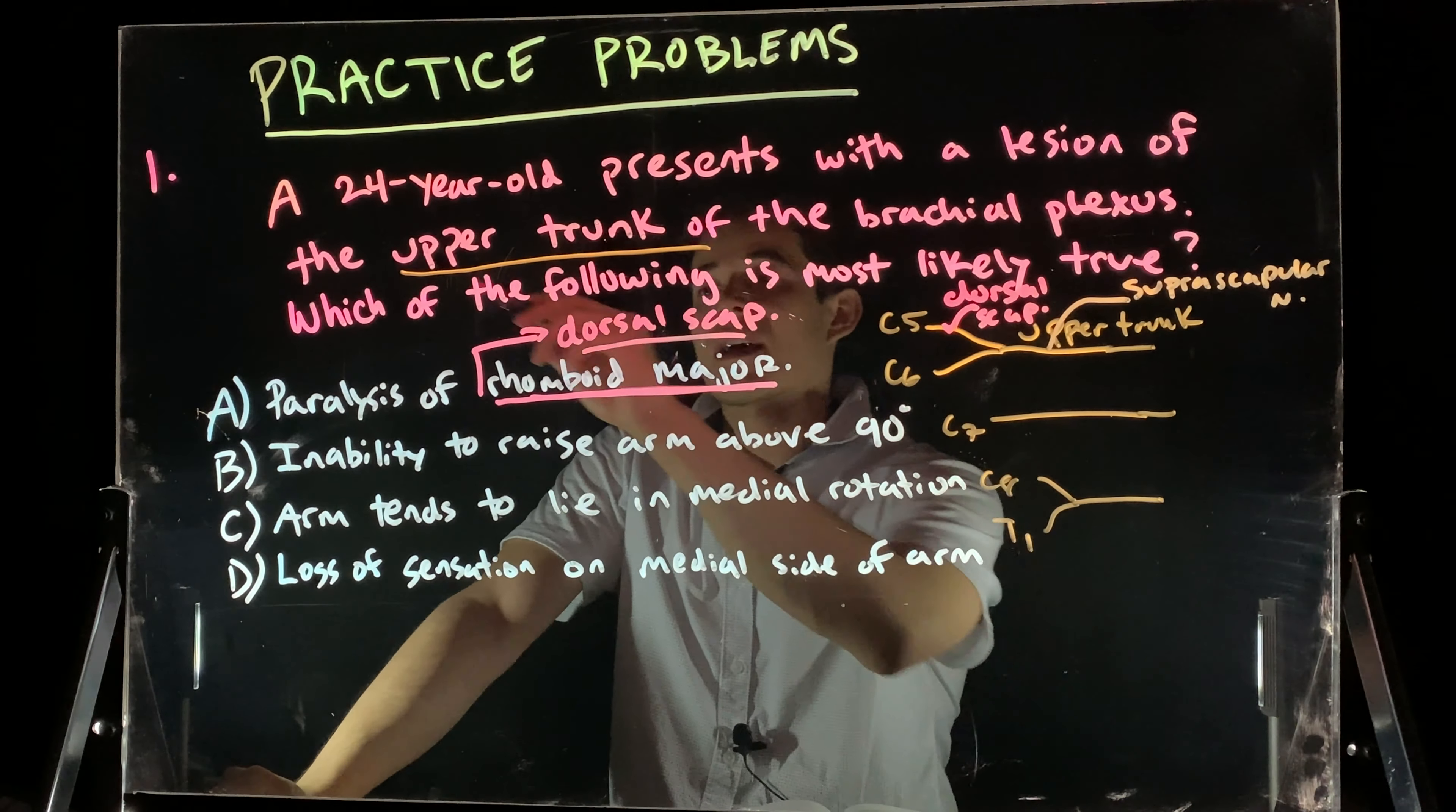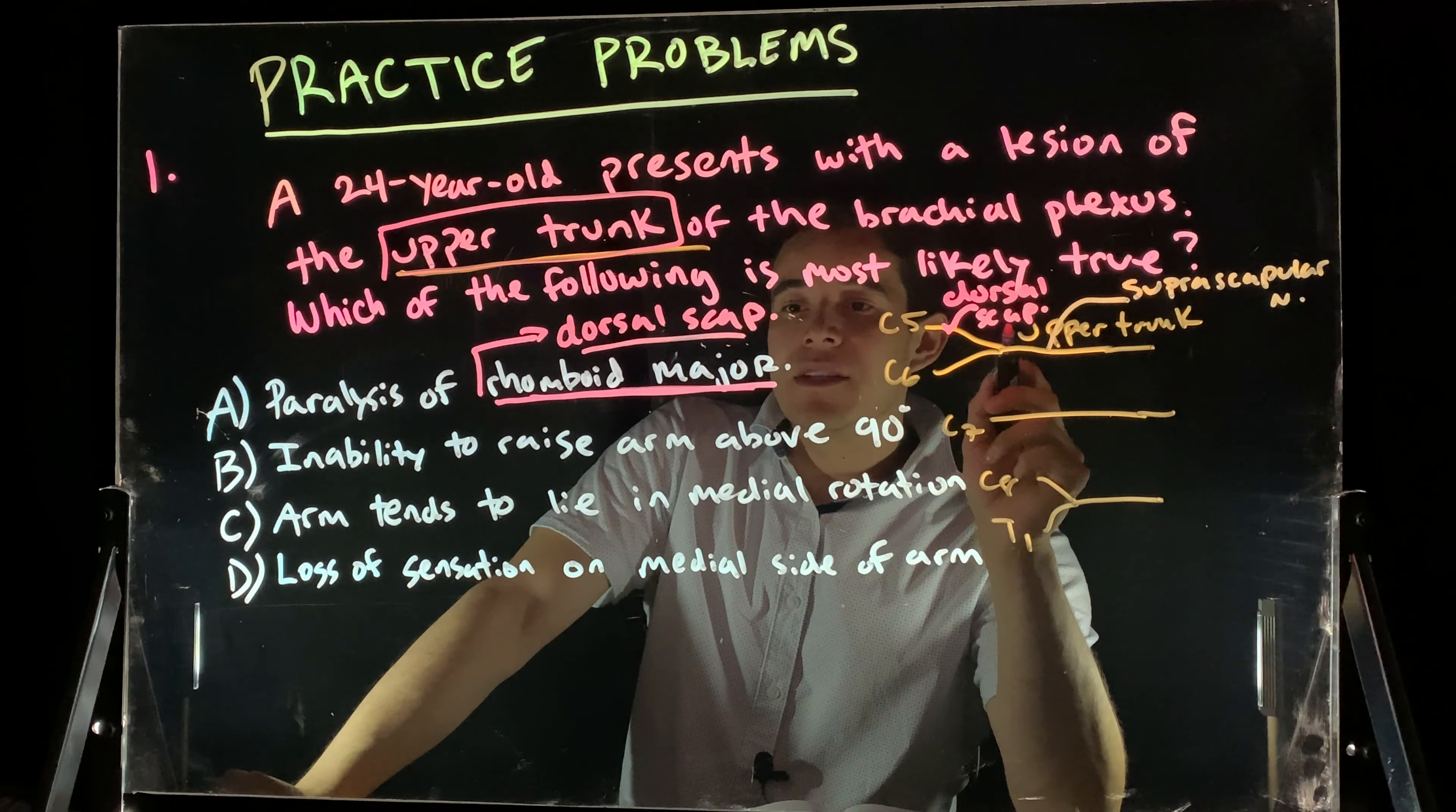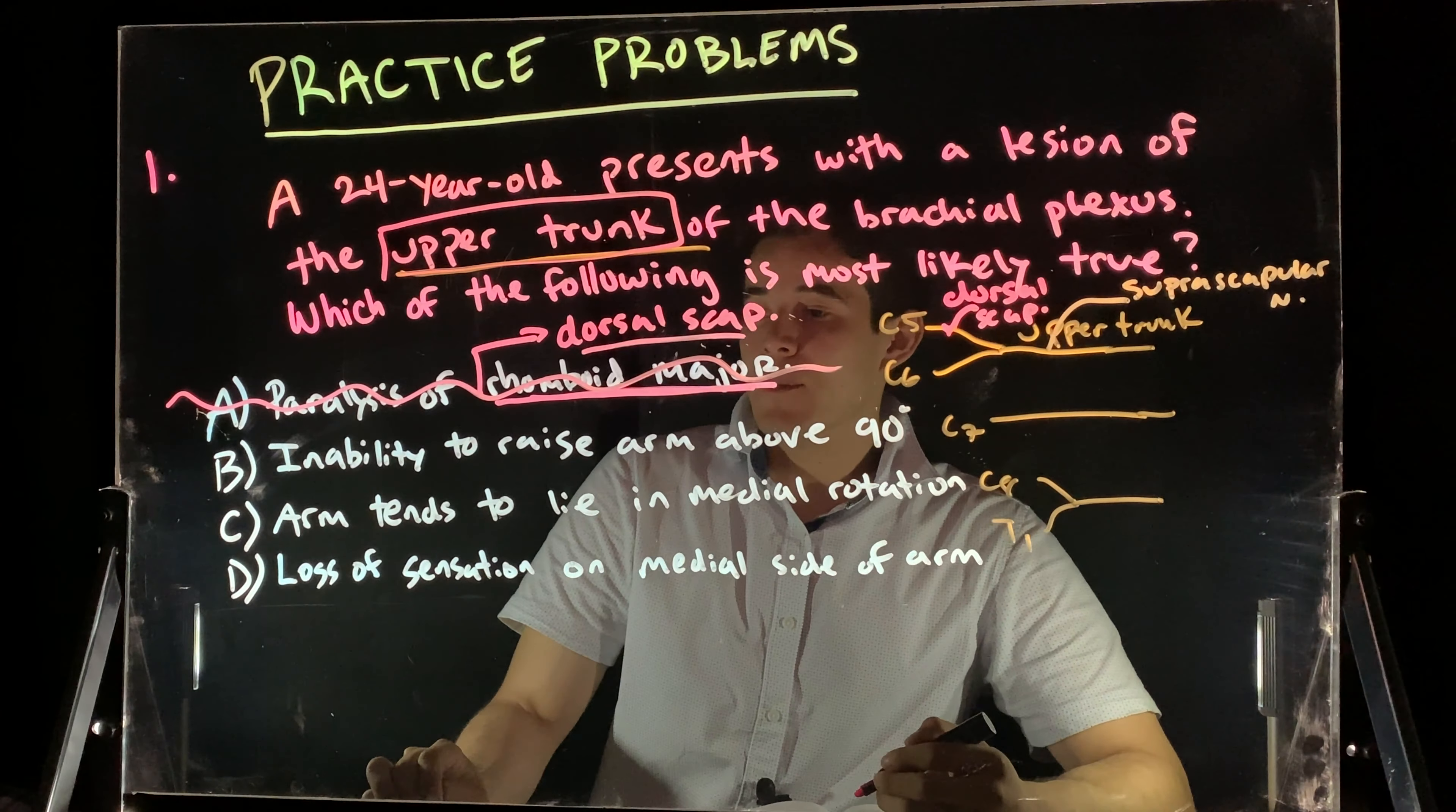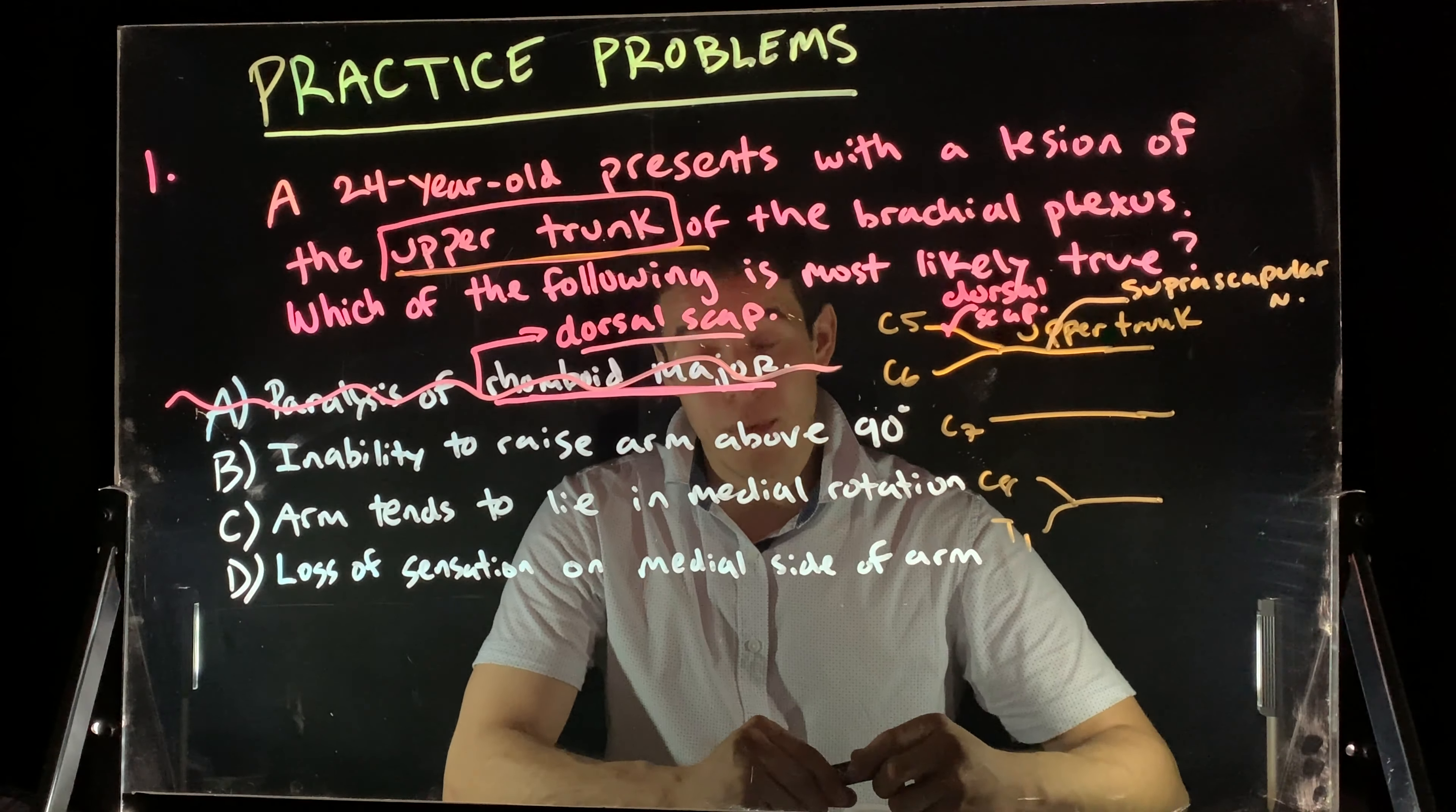But our question here is saying that there's a problem with the upper trunk. So, it doesn't necessarily tell us anything about the dorsal scapular nerve, so it can't be that one. Let's look at B, inability to raise the arm above 90.